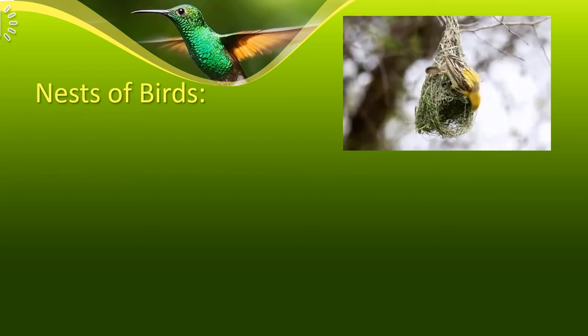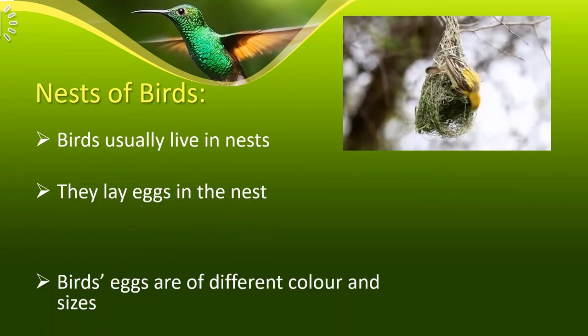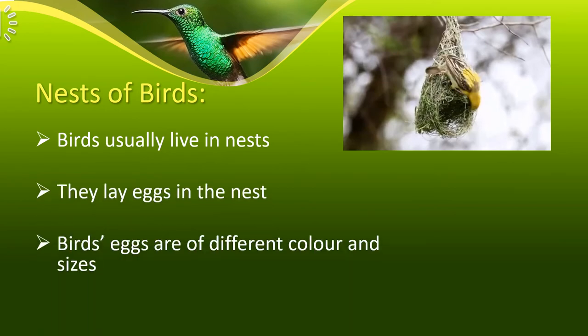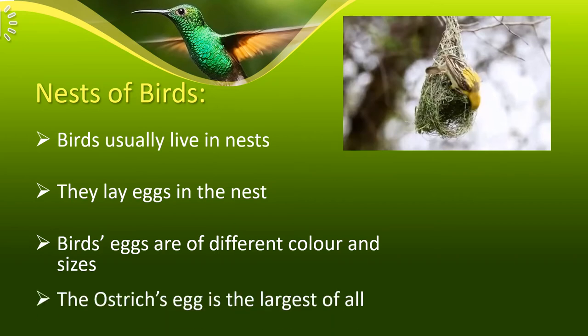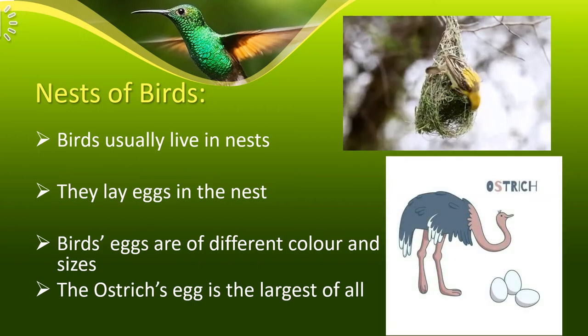A nest is a place where a bird lays its eggs and looks after its babies. The weaver bird makes bottle-shaped nests with grass and leaves. The tailor bird stitches together the edges of a leaf. The coel lays its eggs in the nest of another bird.